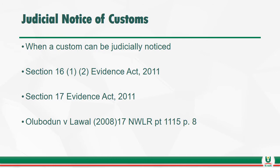Let us look at judicial notice of customs. Section 16(1) of the Evidence Act 2011 provides that a custom may be adopted as part of the law governing a particular set of circumstances if it can be judicially noticed or can be proved to exist by evidence. Subsection 2 of section 16 further provides that the burden of proving a custom shall lie upon the person alleging its existence. By subsection 1, the custom can be judicially noticed and that custom which has been judicially noticed can be adopted.